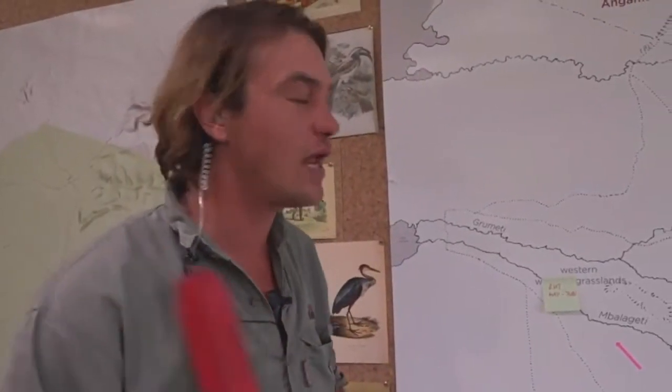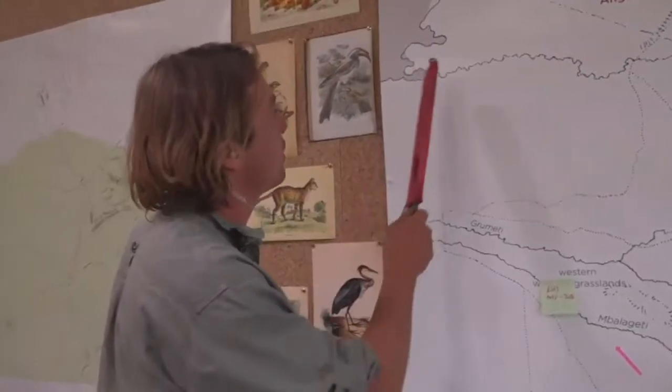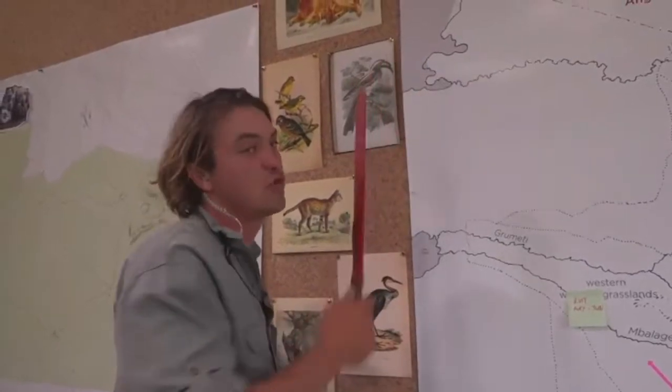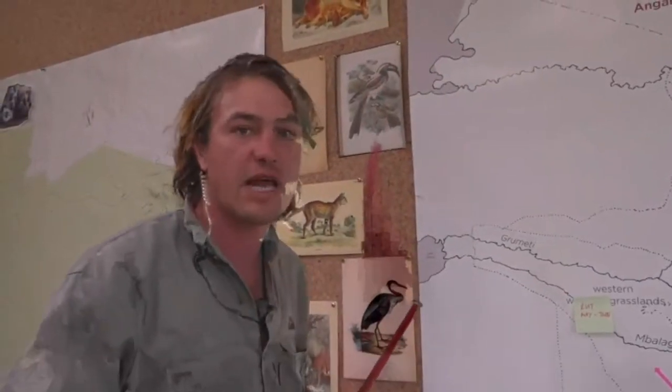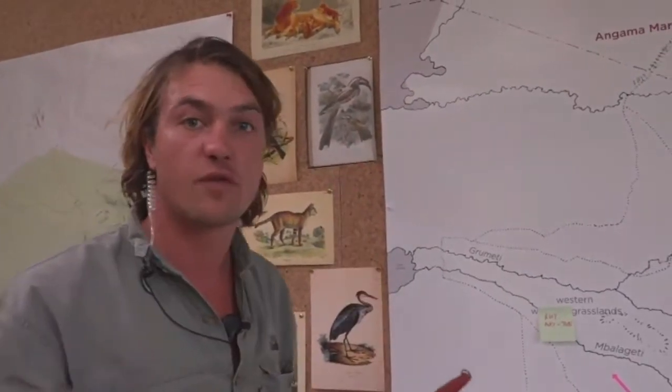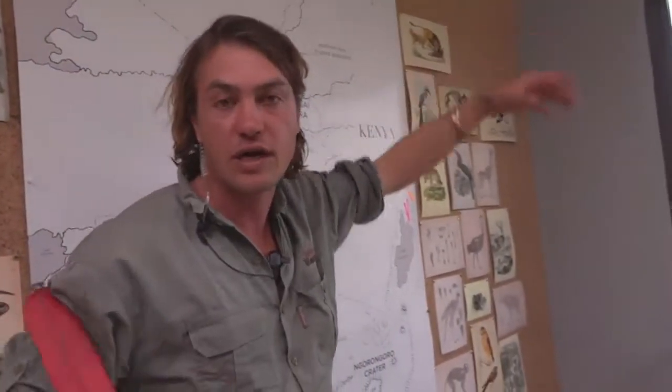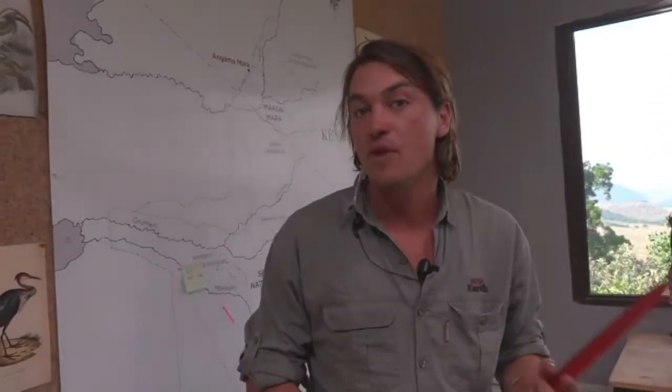You could say the Nile is even longer than it really is. It is one of the five major tributaries that flow into Lake Victoria, which is of course the source of the Nile — the longest river in Africa, flowing all the way down to Egypt and out to sea. The Mara River is quite an interesting one.